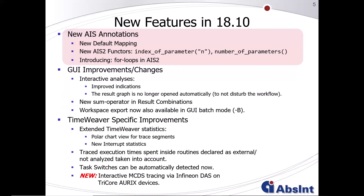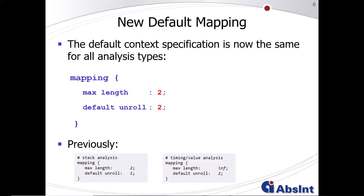Let's get started with ICE annotation related changes. First, we introduce a new default mapping with this release. The default context specification is now the same for all analysis types, independent of whether you do stack, timing, or value analysis. The maximum length for the call strings is set to 2, and the default unroll behavior for all loops in the analyze task is also 2. Previously we distinguished between stack analysis and timing and value analysis — we think this is more consistent to have the same default context specification across all analysis types.